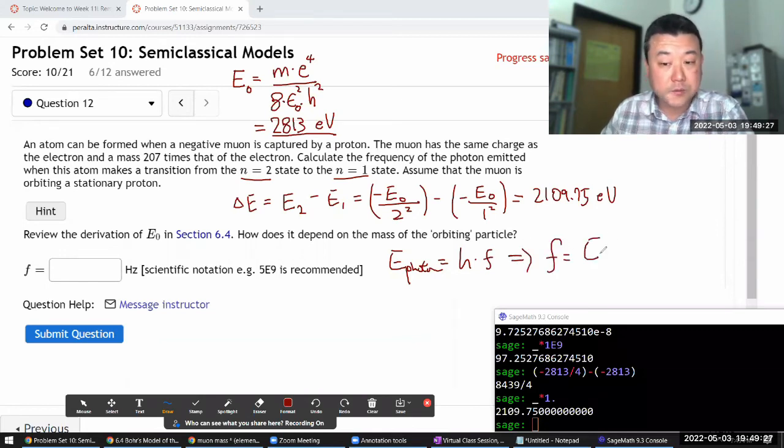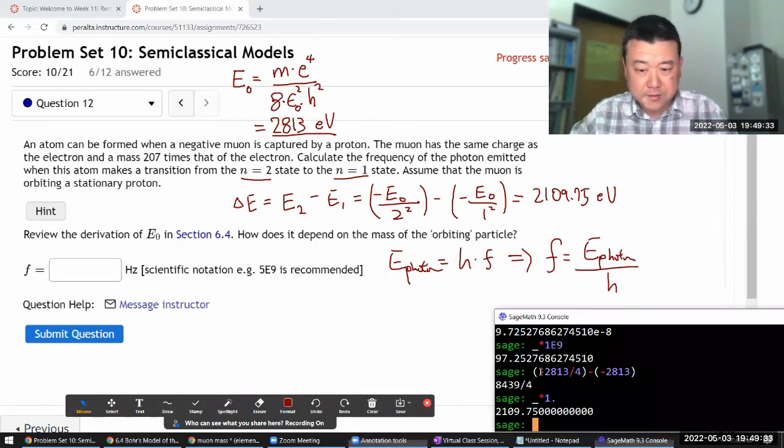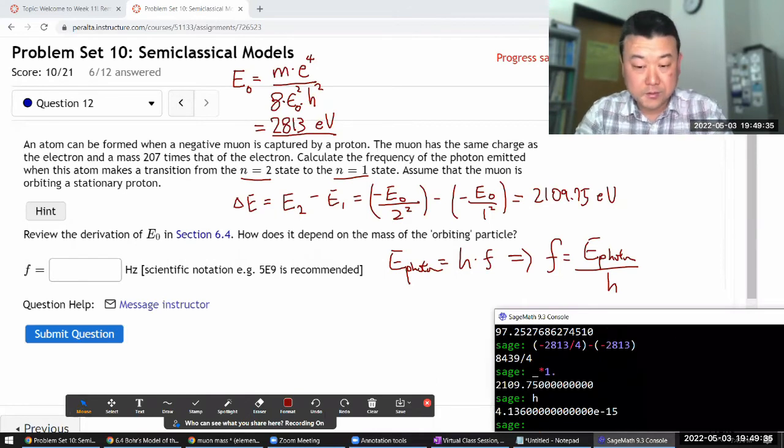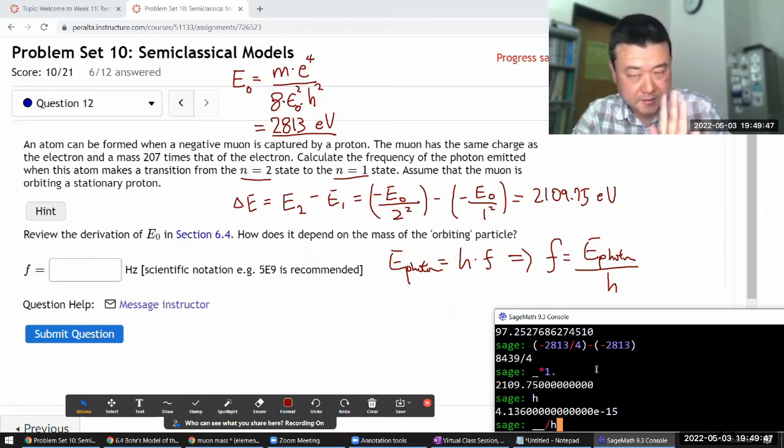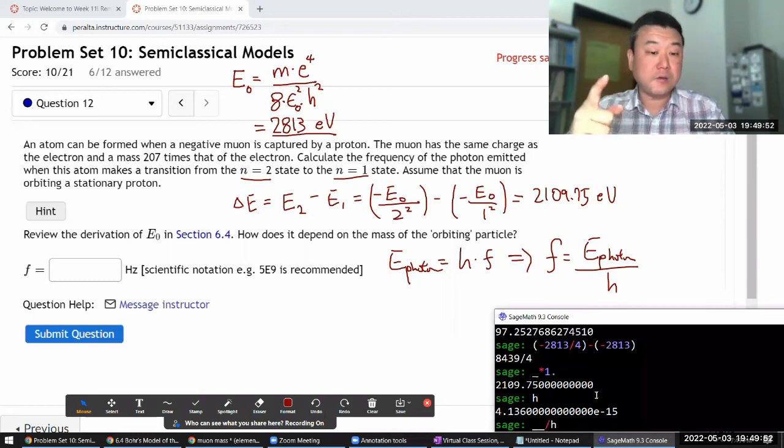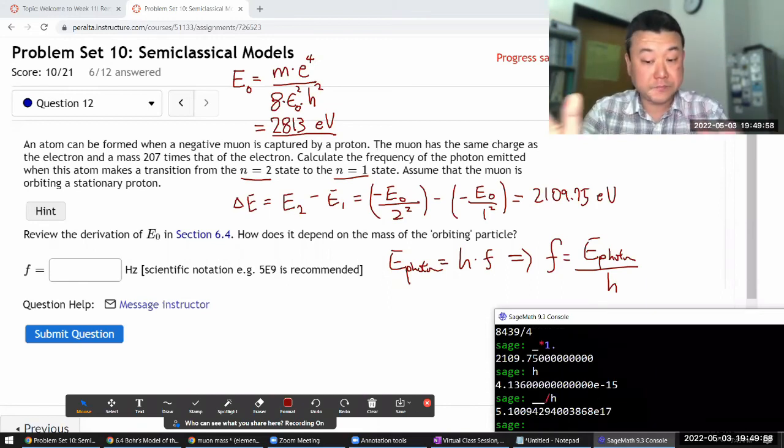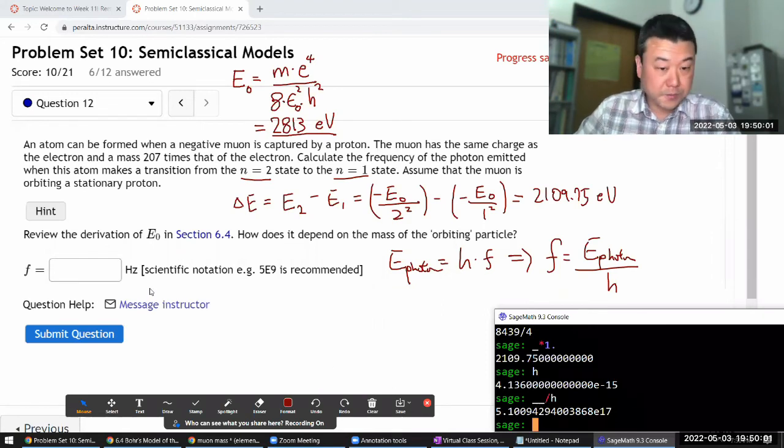So frequency is the photon energy of the above divided by Planck's constant. I think I still have Planck's constant programmed in. So the number above divided by Planck's constant. Because this energy is in electron volt units and my Planck's constant is in electron volt units, eVs will cancel out. I'll have one over second as the overall unit, which matches Hertz. That's a super high number.